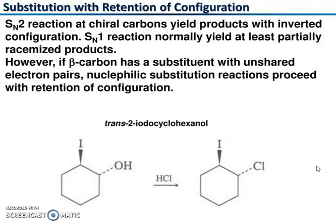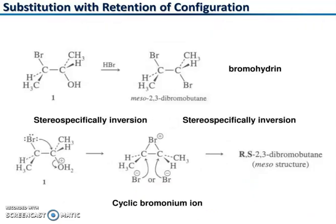In other words, it is a type of assistance through the lone pair of electrons. You can see here trans-2-iodo-cyclohexanol, where I and OH are present. After reaction, it is giving Cl — substitution at the place of OH — and this product has the same configuration. So this is the retention of configuration. Now, substitution with retention of configuration is stereospecifically enforced, where OH is replaced by Br.